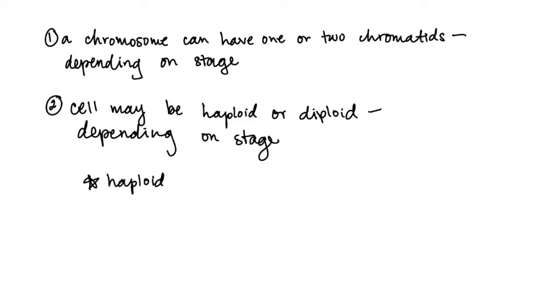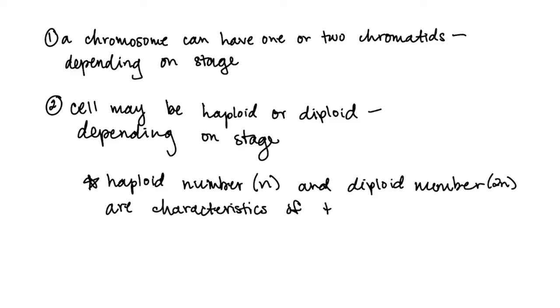Also, it's important to note here that haploid and diploid numbers are characteristics of the species. Next, I wanted to go through an equation that is often used in problems and what this can tell you when solving a problem.